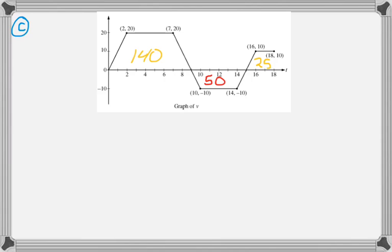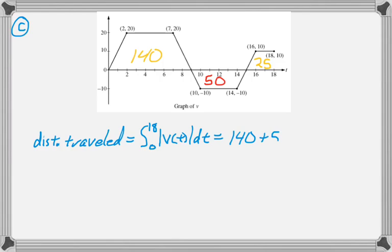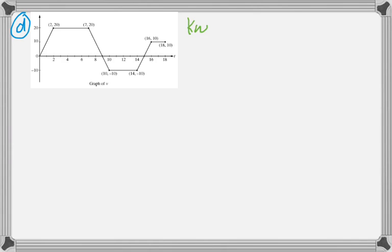Question C is about the total distance traveled by the squirrel. And you just have to walk in knowing that total distance is going to be the integral of the absolute value of velocity. And since we already found all these values in the previous part, all we're really going to do is add them up. So, 140 plus 50 plus 25, and that gives us a total of 215-somethings. No units given, none used.